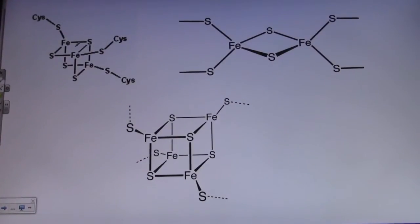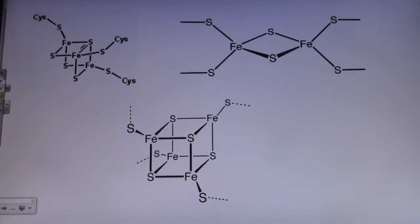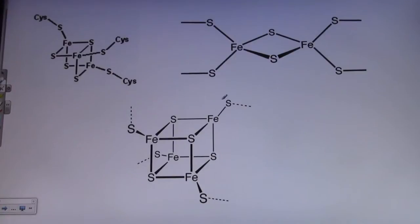All ferrodoxin molecules contain at least one characteristic iron-sulfur cluster, three of which are shown here. While the clusters vary in the number of iron and sulfur atoms in each, they all have a tetrahedral iron atom and terminal sulfur atoms.